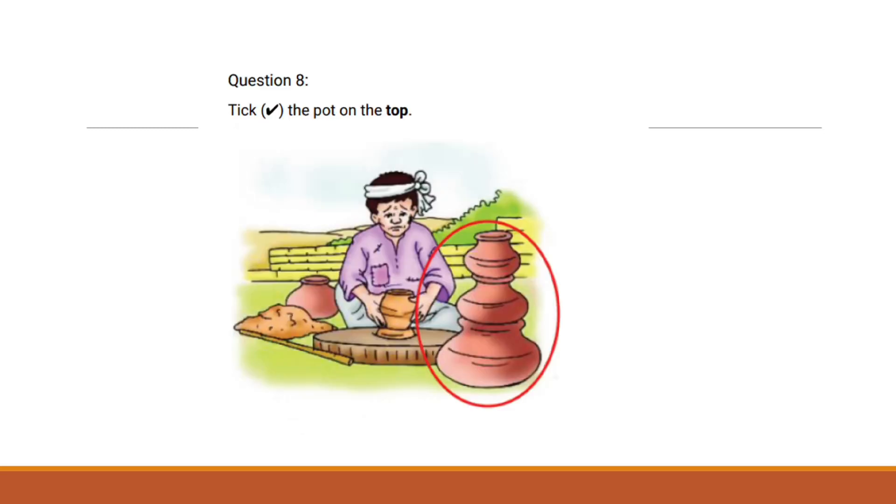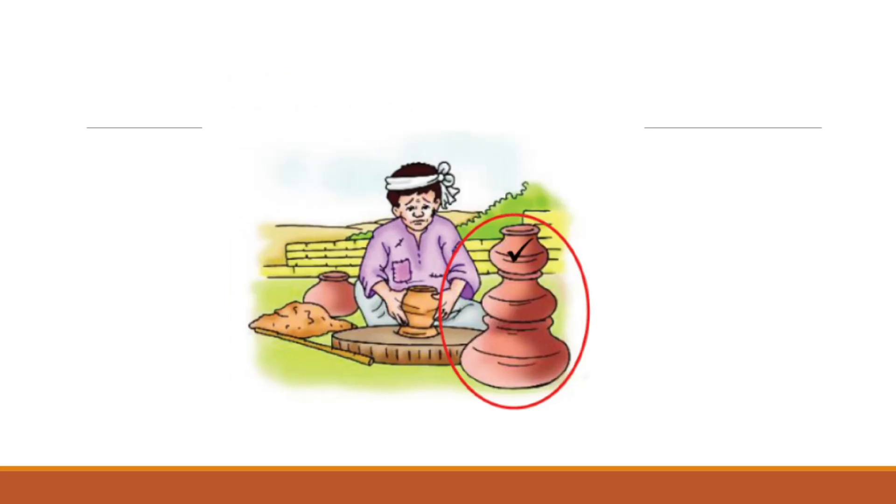You have three pots stacked on top of each other. Tick the pot on the top. Top, the pot that is physically the highest in the stack. It's the one that you would see first when looking at the stack from the outside.